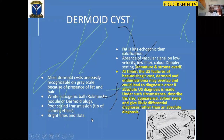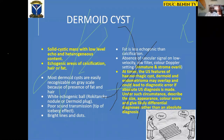Any of these benign ovarian tumors can undergo torsion. There are three classic features of dermoid cysts: first, it is a solid-cystic mass with low-level echoes and heterogeneous content — the mixed echogenic mass; second, it has echogenic areas of calcification, fat, or hair; and third, acoustic shadowing. In 75% of cases, you find at least two of these in a dermoid. For the Big Four lesions, you don't need more than a grayscale to make a diagnosis — in over 90% of cases, you can make the diagnosis with grayscale ultrasound scan alone.